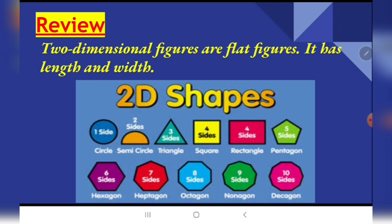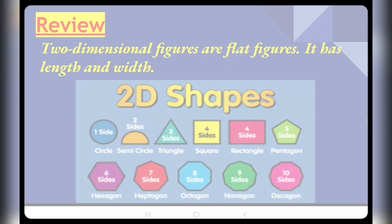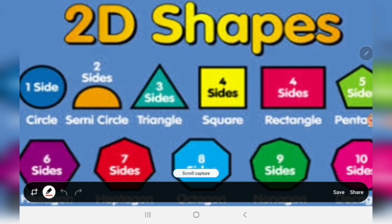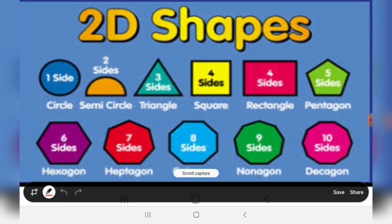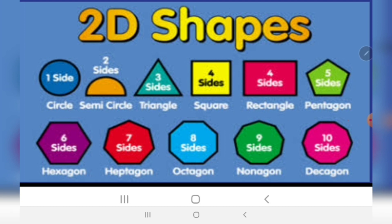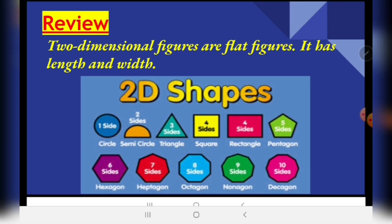Two-dimensional figures are flat figures and they have only length and width. Here are examples of 2D shapes: one side is a circle, two sides is a semicircle, three sides is a triangle, four sides is a square, four sides is a rectangle, five sides is a pentagon, and so on and so forth.